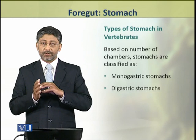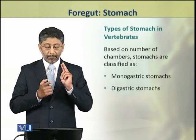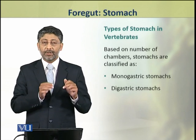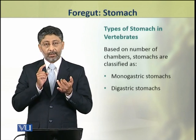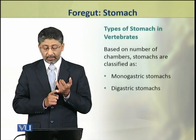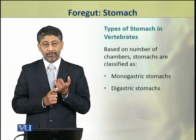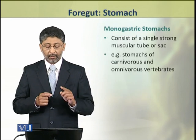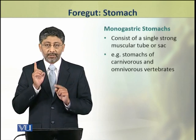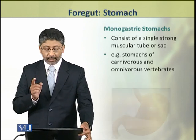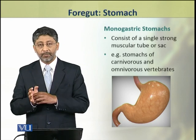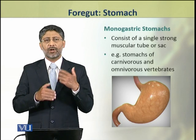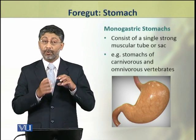In vertebrates, there are two major types of stomachs, which are based on the number of chambers. Stomachs may be monogastric or digastric. Monogastric stomachs consist of a single strong muscular tube or sac — for example, the stomachs found in carnivores and omnivores.